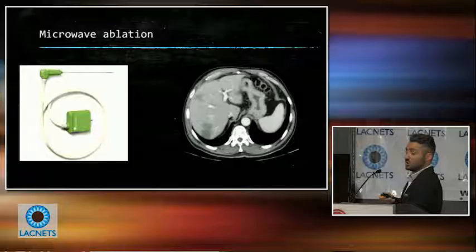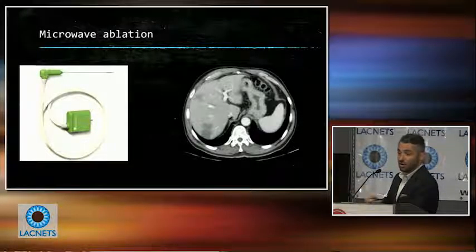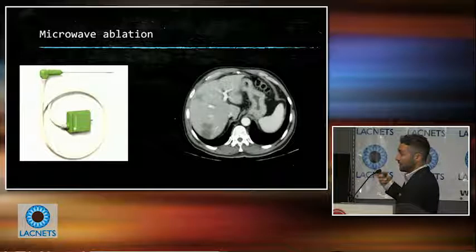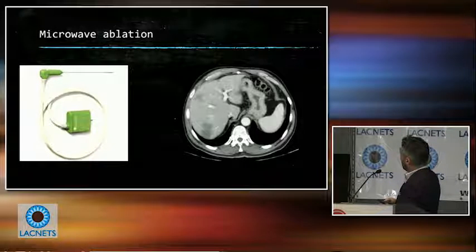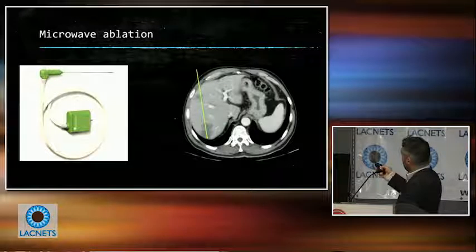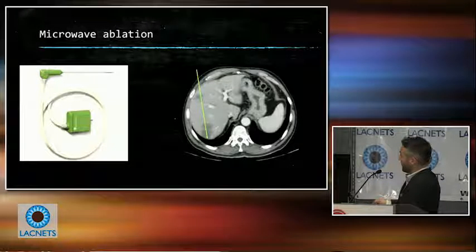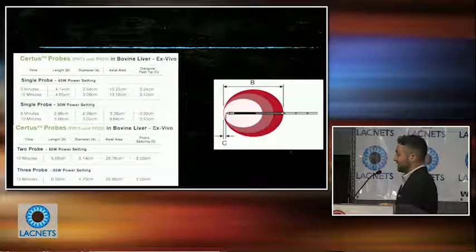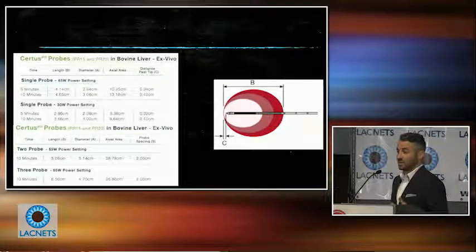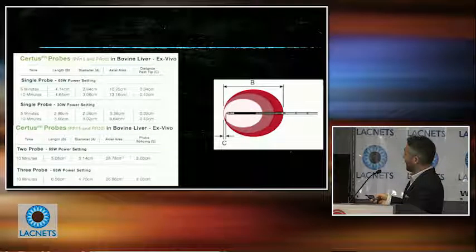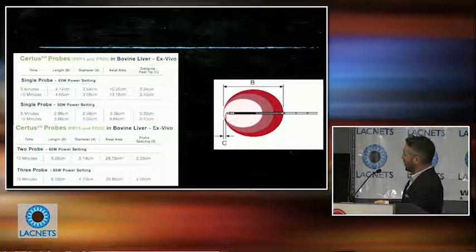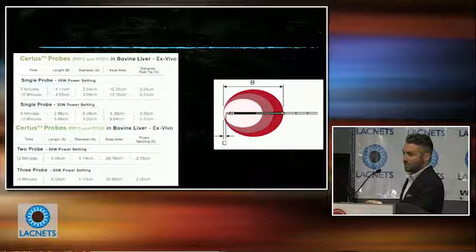This is the microwave ablation probe. When we do our procedure, we do it under CT or ultrasound guidance for all types of ablation — whether RFA, microwave, or cryo. We place the probe through the anterior abdominal wall into the liver. This dark area is tumor, so we're placing the probe into the tumor and then performing our ablation. The ablation size depends on the wattage and the time — for example, 65 watts at 10 minutes gives us a larger ablation zone. Adding a second probe creates an even larger zone.